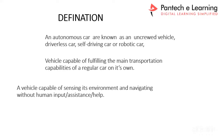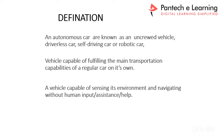So the definition of an autonomous car, also known as an uncrewed vehicle, driving car, or robotic car: it is a vehicle capable of fulfilling the main transportation capabilities of a regular car — sensing the environment and navigating without human input, assistance, or handling.